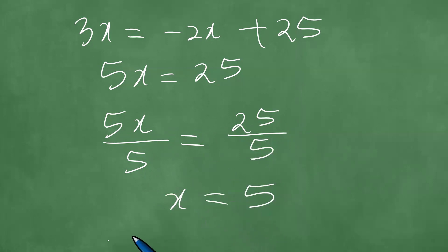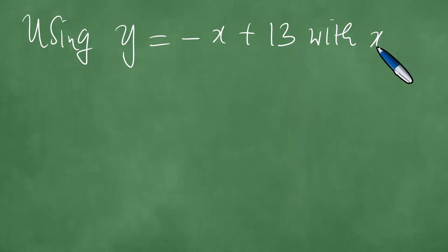So we have x equals 5. Moreover, using y equals minus x plus 13 together with x equals 5, we have y equals minus 5 plus 13, which means y equals 8. We have got, therefore, at this point, that y equals 8 and x equals 5. Let's do a quick check.